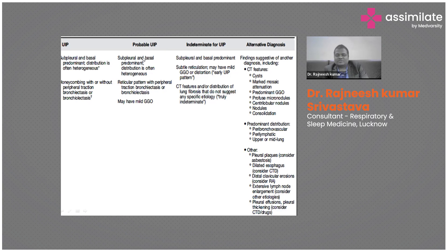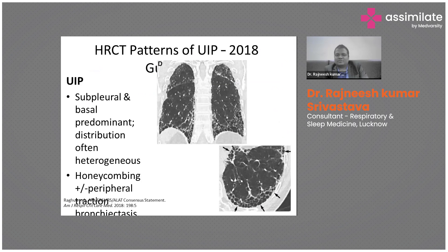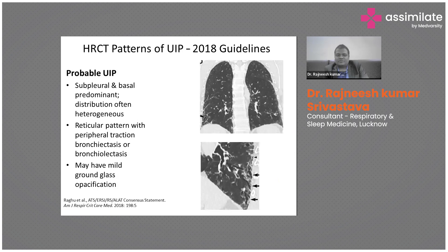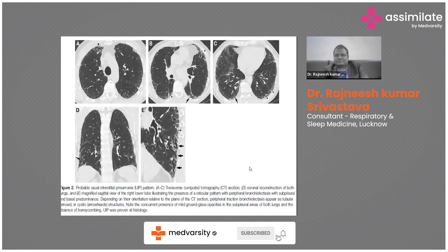Another pattern is probable UIP. When you have all other findings like tractional bronchiectasis or septal thickening, but you do not have honeycombing, it is known as probable UIP. Probable UIP is subpleural and basal predominant distribution, often heterogeneous reticular pattern with peripheral tractional bronchiectasis, and may have mild ground glass, but does not have honeycombing. We can see septal thickening and bronchiolectasis — dilatation of airway — but no typical honeycombing.